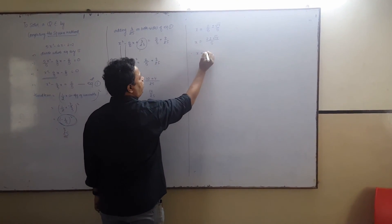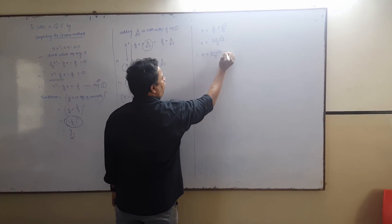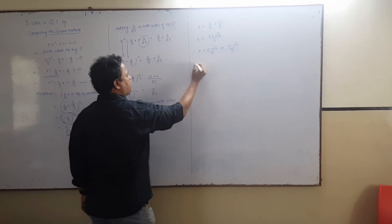Therefore, x has two values, that is, 2 plus root 14 upon 5, or, 2 minus root 14 upon 5. Your final answer.